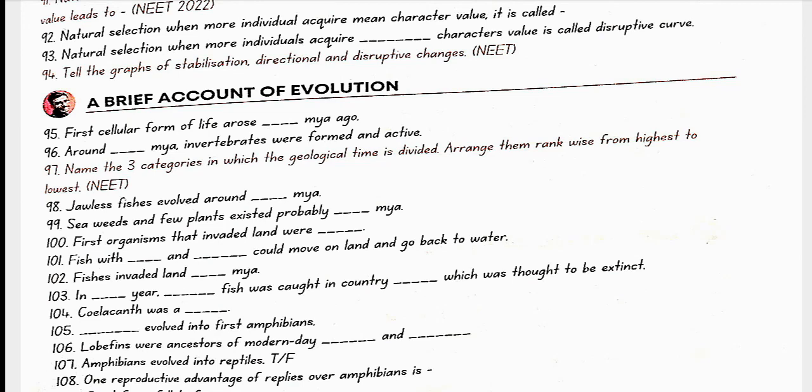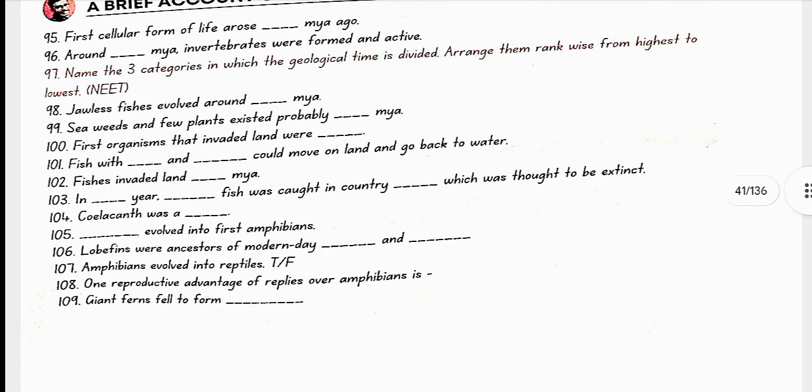In 1938, coelacanth fish was caught in the country South Africa, which was thought to be extinct. Coelacanth was a lobe-fin. Lobe-fins evolved into first amphibians. Lobe-fins were ancestors of modern day frogs and salamanders. Amphibians evolved into reptiles. Yes, true. One reproductive advantage of reptiles over amphibians is reptiles lay thick-shelled eggs which do not dry up in the sun, unlike those of amphibians.